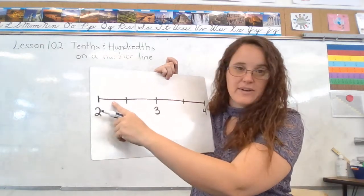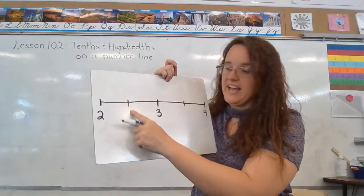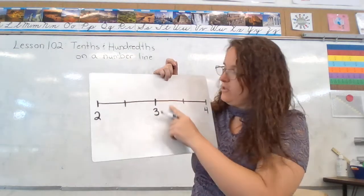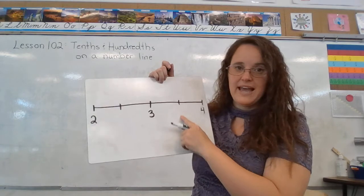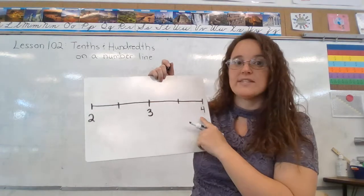Right about here I would have two and one-fourth, two and a half, two and three-fourths, three, three and one-fourth, three and a half, three and three-fourths, four.